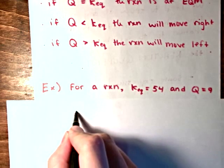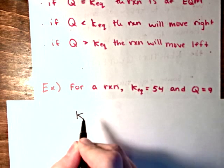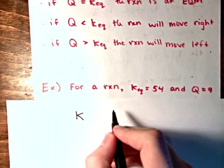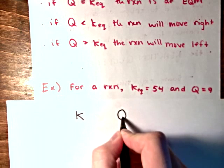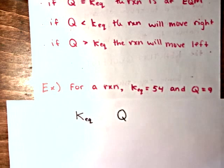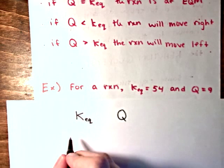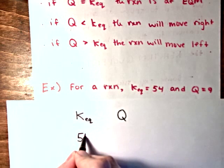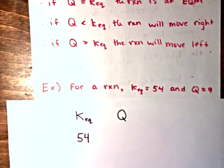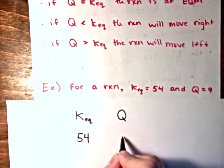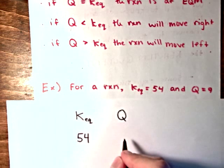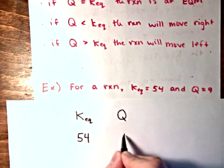We start off by writing K and Q in alphabetical order, just so you remember to do it this way. K comes before Q. And then we write each of their respective values beneath the variable. 54 beneath K, and 9 beneath Q.